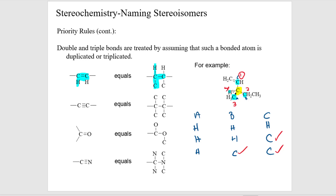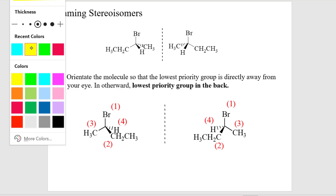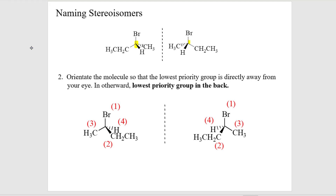So that's how we assign priority. Let's go back to our example for naming the butane molecule. Here's your chiral carbon, and we've assigned priority. We now know why the carbon on the left is priority three and the ethyl group is priority two. The hydrogen in the back is four. So the next step is to take your lowest priority group — which is hydrogen — and place it in the back.